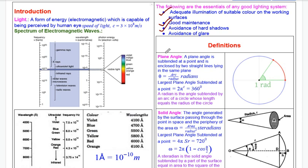Consider the doctor example: the doctor is operating on a patient's abdomen. If there are hard shadows — thick black shadows — it becomes difficult to see clearly during the operation. Hard shadows are a problem. Glare is another issue. If you use a bright light at night, like a mobile phone, the glare is very strong — it strains the eyes.